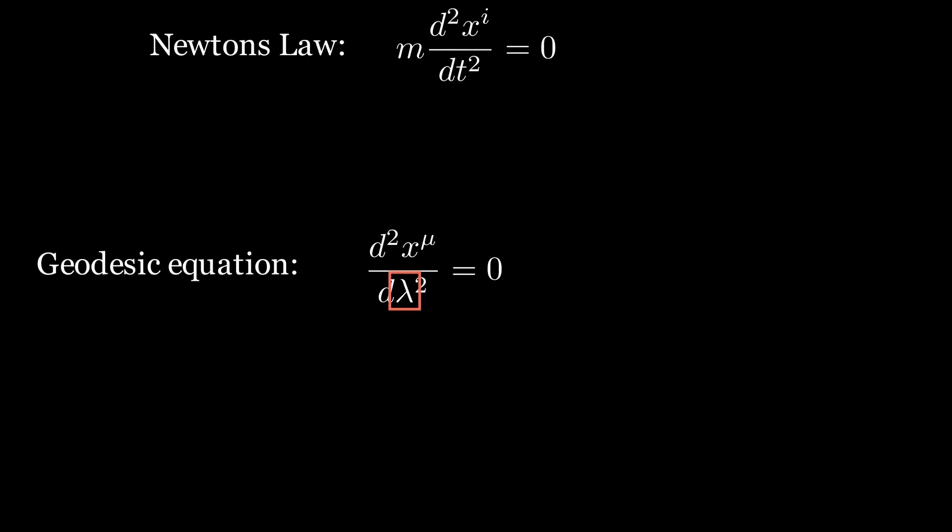This is an affine parameter. An affine parameter is one which keeps the geodesic equation in its usual form that was showed earlier. For particles with mass, it is usually taken to be the proper time, which is the time experienced by the particle itself. For a massless particle, we cannot use proper time as massless particles do not experience time, so one must choose another parameter. These two equations now are nearly identical. They both reduce to equations of straight lines when no forces are present.